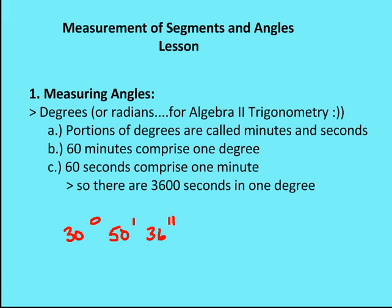A portion of a degree is going to be called minutes and seconds. We know that 60 minutes comprise one degree — just like 60 minutes are in one hour, and one hour is equivalent to one degree when measuring angles. We also know that 60 seconds comprise one minute. So in one degree there are 60 minutes and 3,600 seconds, or 60 minutes times 60 seconds.